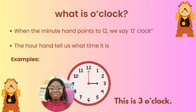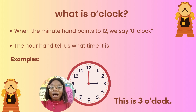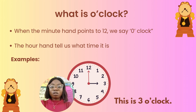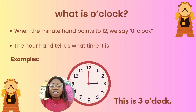What is a clock? When the minute hand points to 12, we say o'clock. The hour hand tells us what time it is. Look at the picture of the clock below. You can see that the long hand points to 12 — that is o'clock — while the short hand points to 3. So this is 3 o'clock.